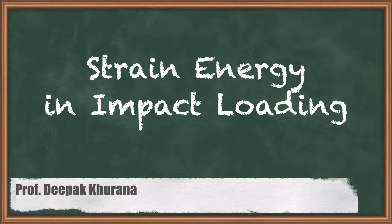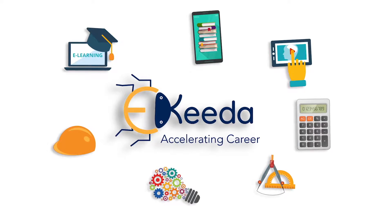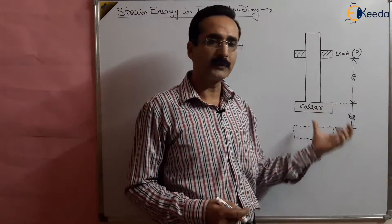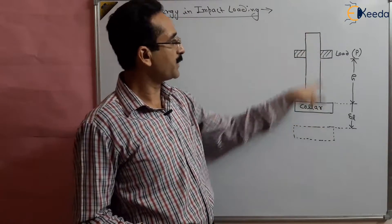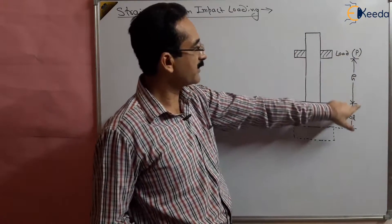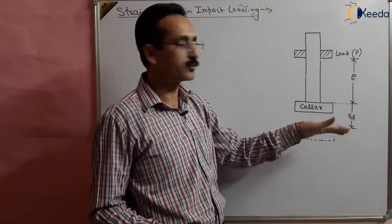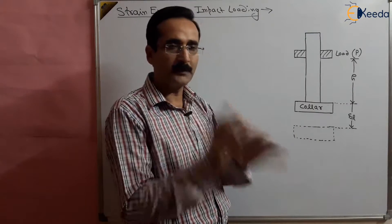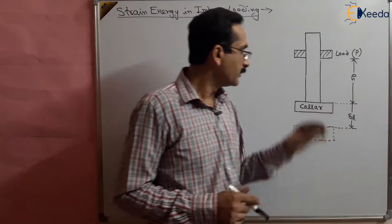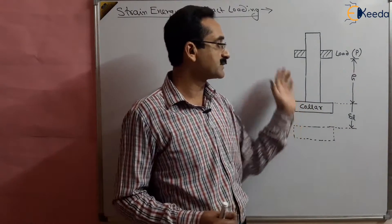In this session we are going to study the strain energy stored due to impact loading. This is the case figure for impact loading. There is a collar and there is a load. The total length of the bar is L and this load is at a distance h from the collar. This falls due to gravity on the collar, and due to this fall there is an impact on the collar, which causes a deflection delta L in the collar. We want to find out the strain energy stored and what stresses are developed.